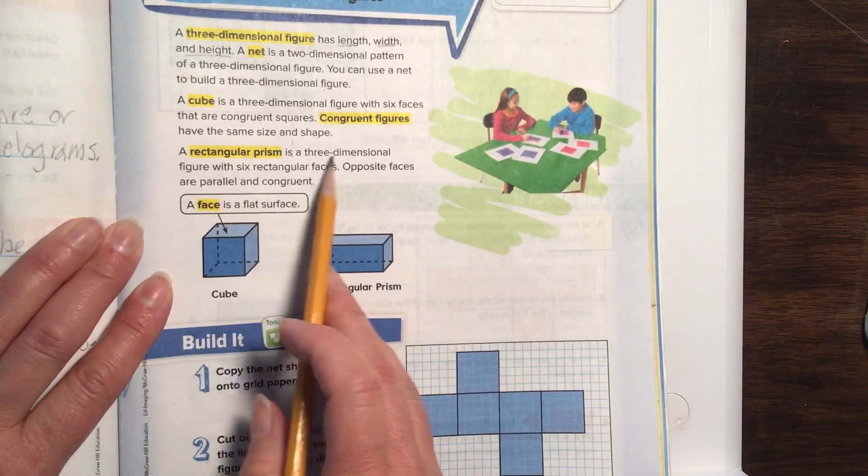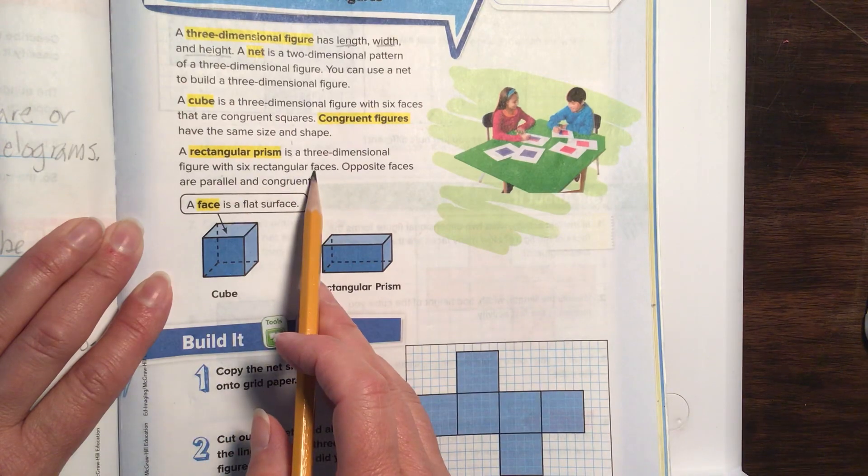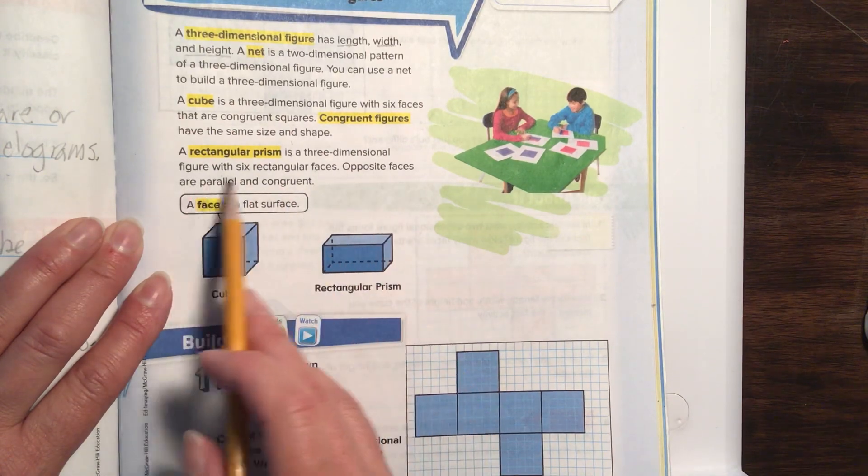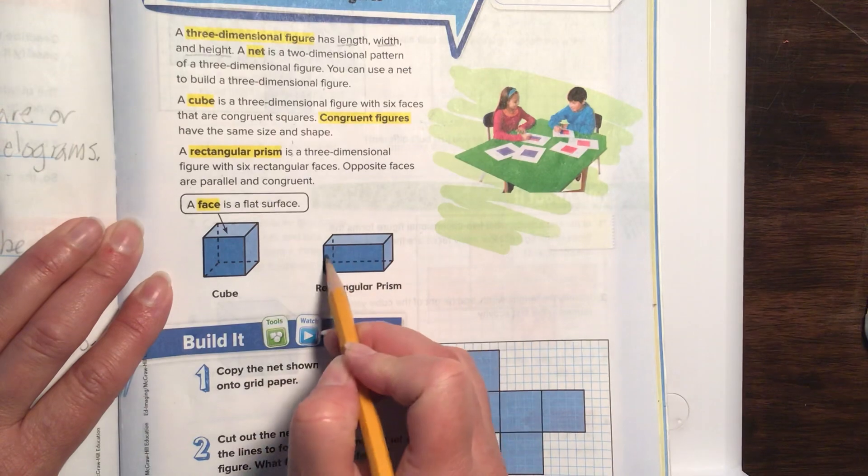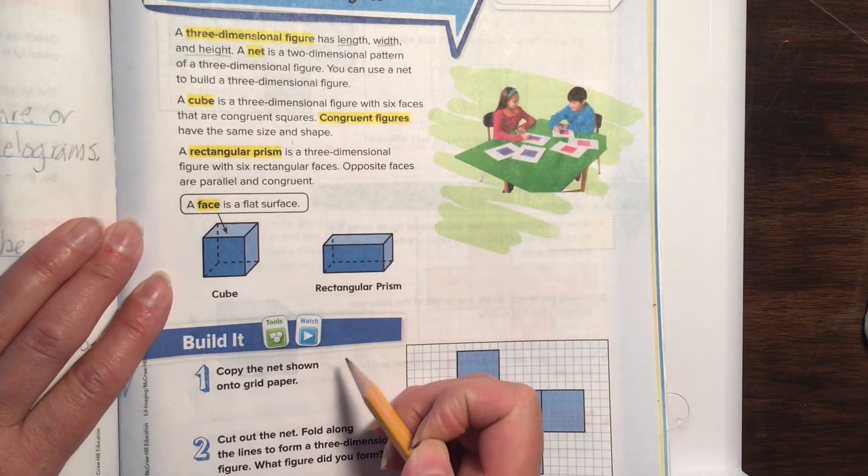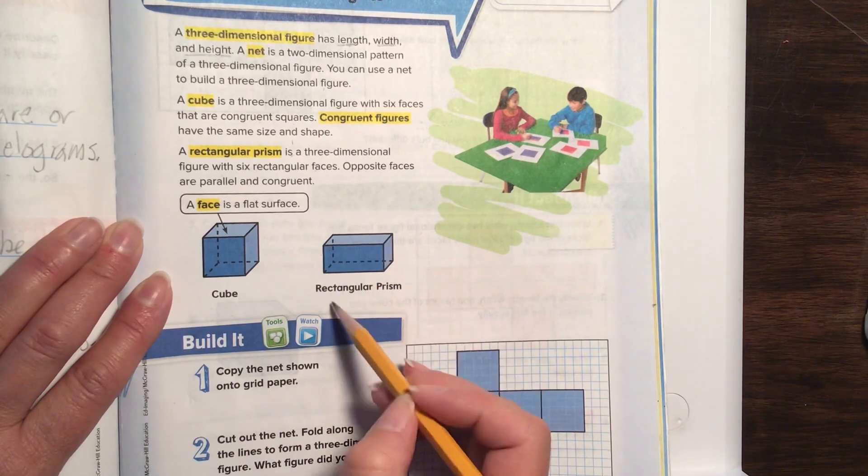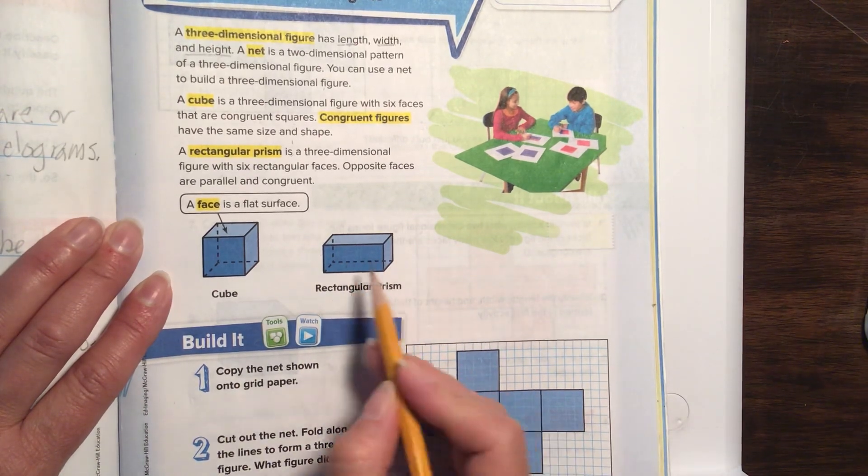A rectangular prism is a three-dimensional figure with six rectangular faces. Opposite faces are parallel and congruent, which means they're the same length, and they're parallel. And it has six rectangular faces. Rectangular prism. Or, pretty much, a block.